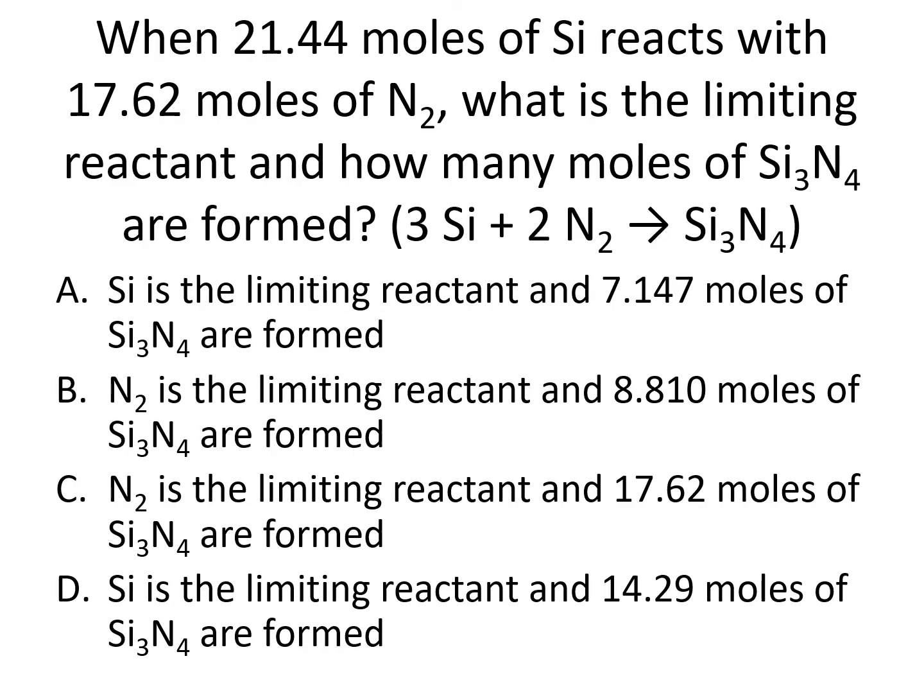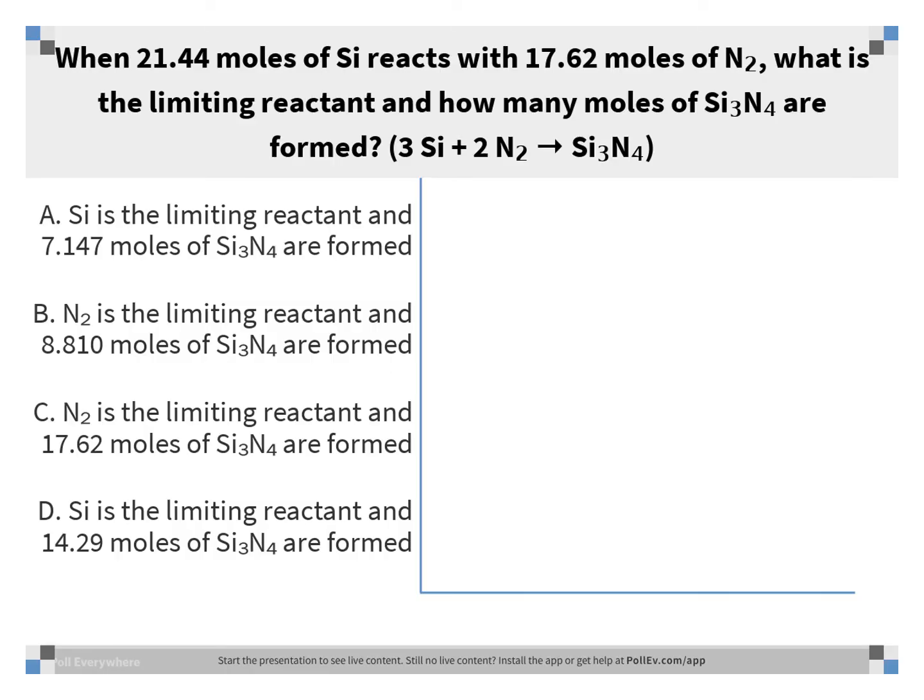When 21.44 moles of silicon reacts with 17.62 moles of nitrogen, what is the limiting reactant and how many moles of Si3N4 are formed? The balanced equation is: 3Si + 2N2 → Si3N4. The correct answer is A: silicon is the limiting reactant and 7.147 moles of Si3N4 are formed.